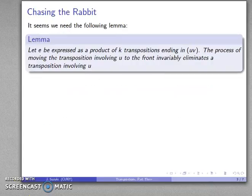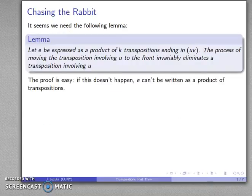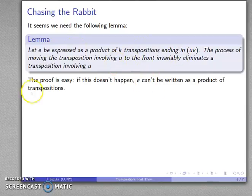The proof of this is pretty easy. If it doesn't happen, we can't write e as a product of transpositions. So if e can be expressed as a product of transpositions, then somehow u has to be eliminated, because otherwise we can't do it.